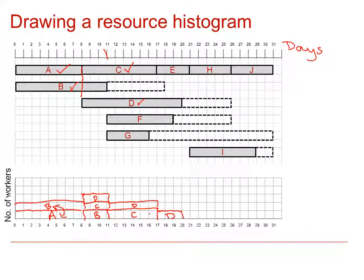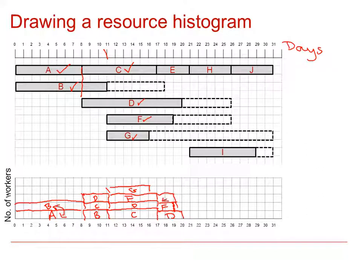At day 11, we've got F, and F continues to day 19. So I draw F to 17, then move down a row to 19. G also starts at day 11 and finishes at 16, so G starts at day 11 and finishes at 16. And then E starts at 17 and goes along to 21 — so 17 to 19, then 19 to 20, and then 20 to 21 on the bottom row.